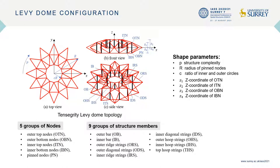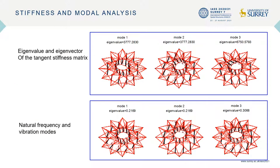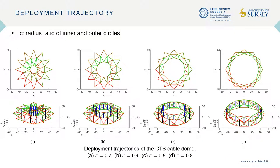For a traditional cable dome, we use these shape parameters to define the cable dome, and we are interested in converting it into a deployable one. The first question is how many cluster strings should we use — we want to use the least number, which means the least number of actuators. From the analysis, NC should be at least three, and we use three as an example. We get the stiffness and modal analysis — the eigenvalues and eigenvectors of the tangent stiffness matrix — and the natural frequencies and modes. The deployment ratio is determined by the radius ratio of the inner and outer radius circles, so for different values we get different configurations.